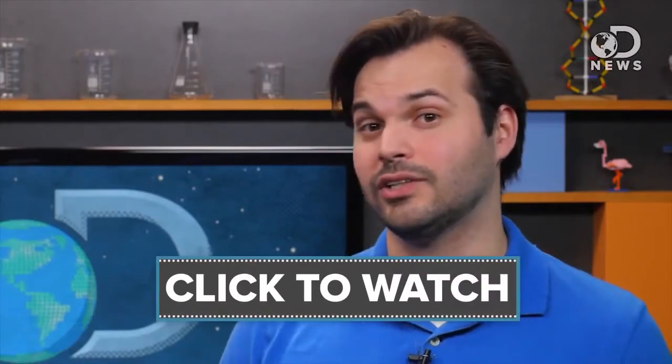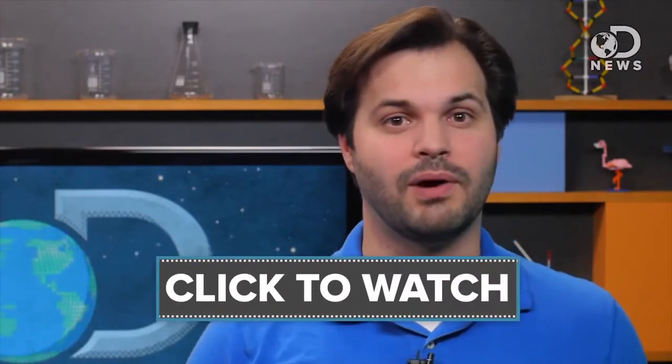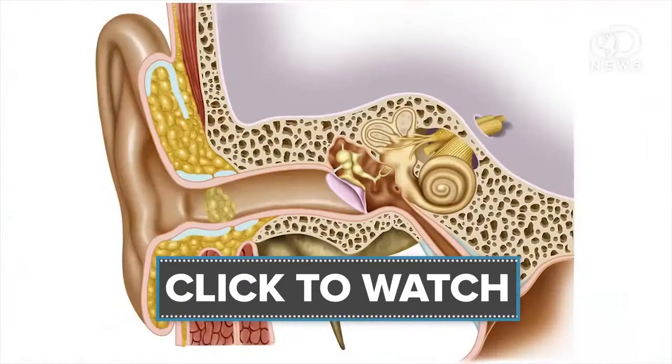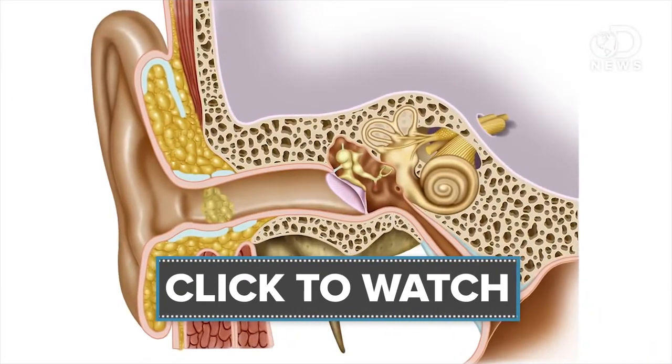It's mostly dead skin cells, proteins and oils added by the apocrine gland. The junk is there to protect the inner ear from water or infection.